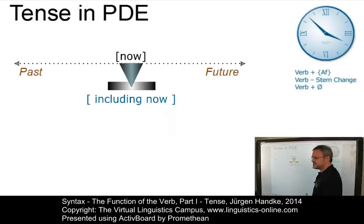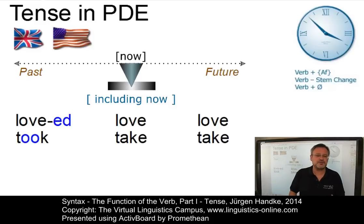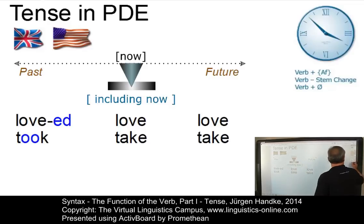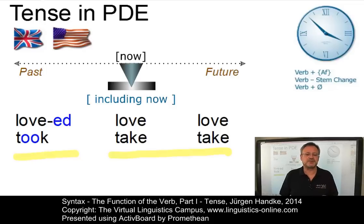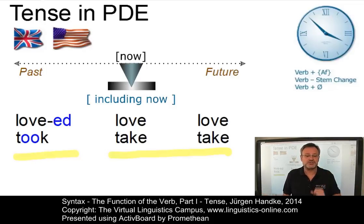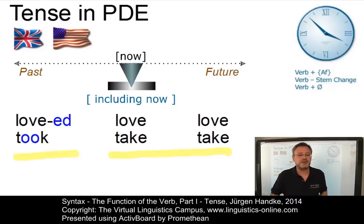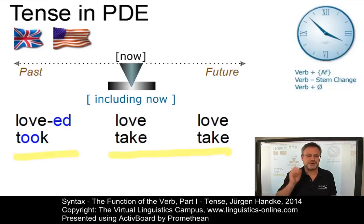In present-day English, the situation is different. Since English has no inflected future form of the verb, this threefold opposition is reduced to two tenses: the present tense and the past tense. Remember, tense is an inflectional category, but there is no inflectional marker in present-day English to denote future time. Of course, present-day English has options to refer to future time events — however, not by means of inflection, and thus not by using a special tense. Thus, present-day English has only two tenses: the present tense and the past tense.